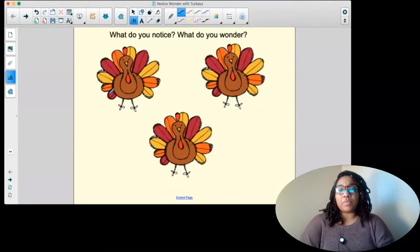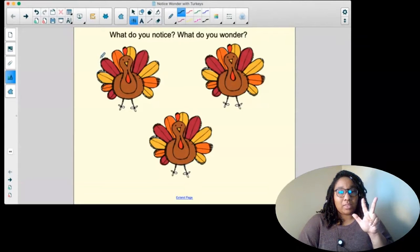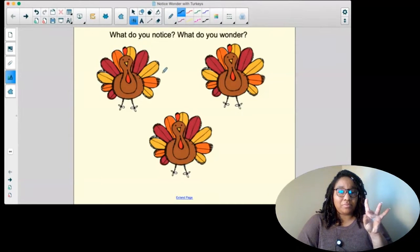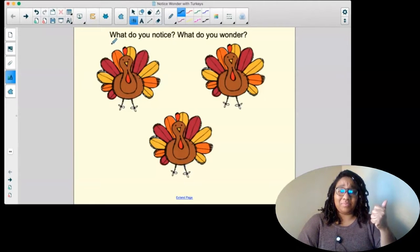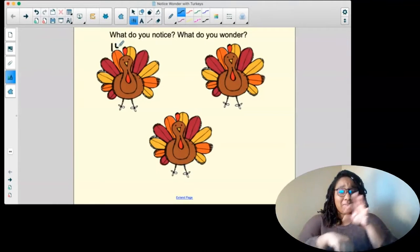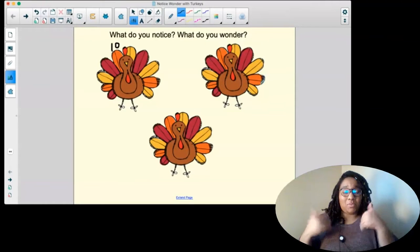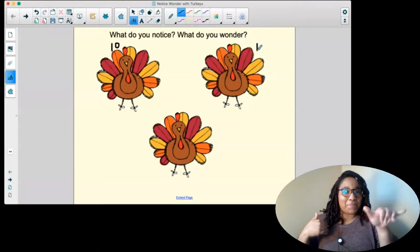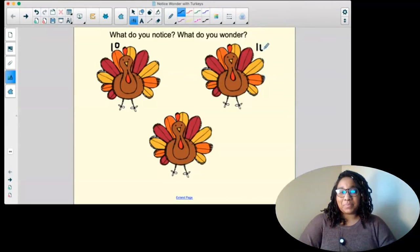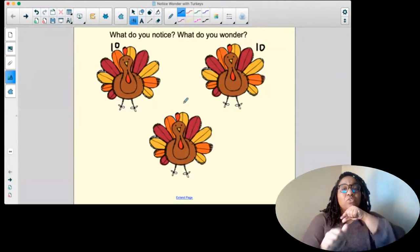Ready? One, two, three, four, five, six, seven, eight, nine, ten. This turkey has ten feathers. That means this turkey also has ten feathers because they're the exact same picture, right? So each turkey has ten feathers.